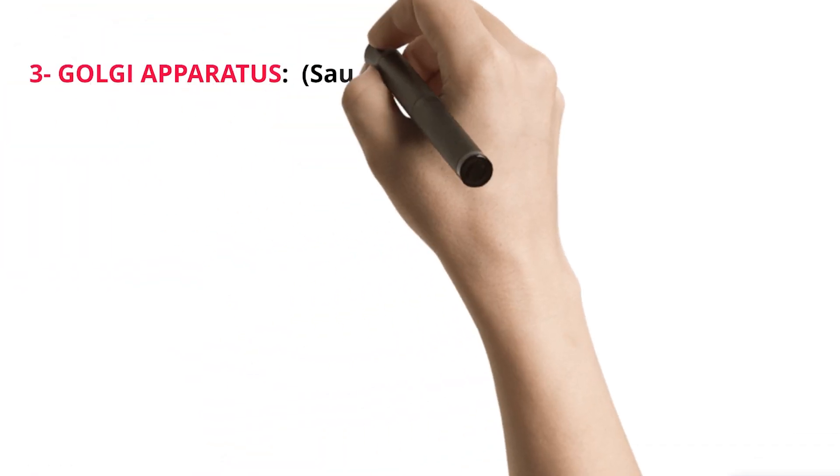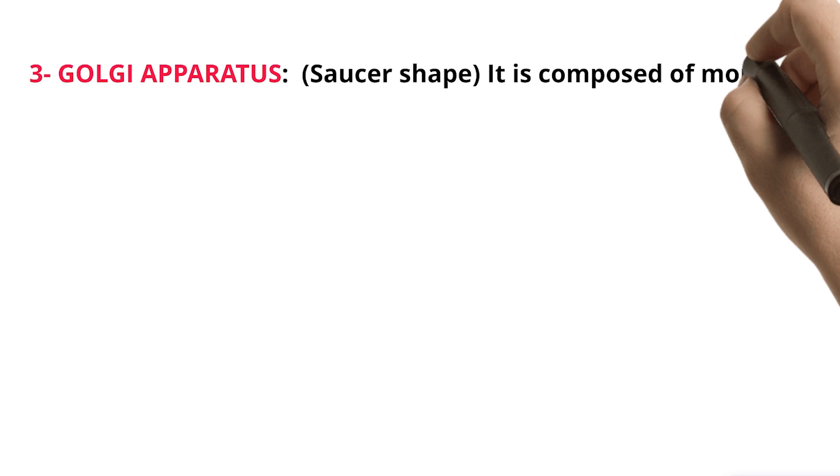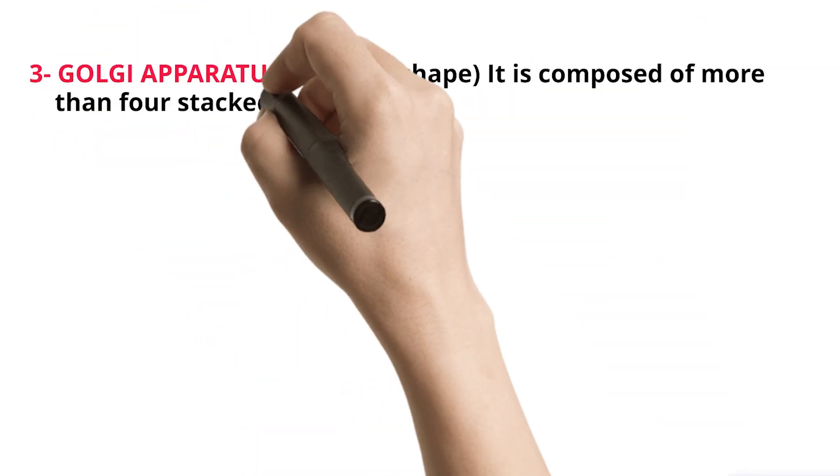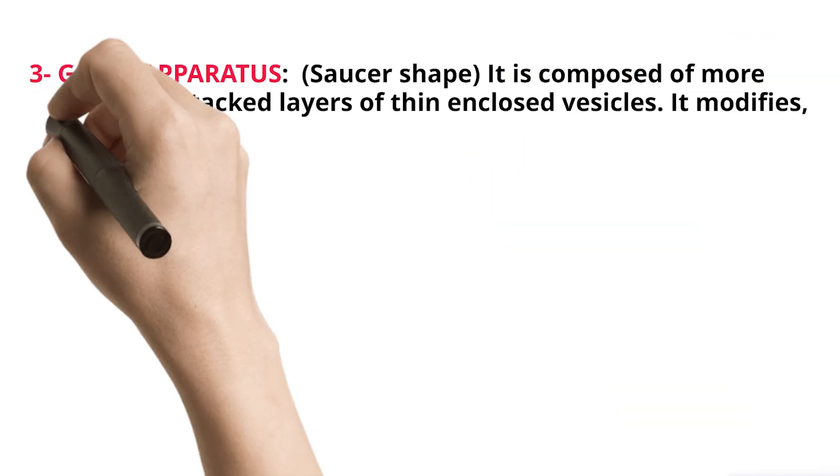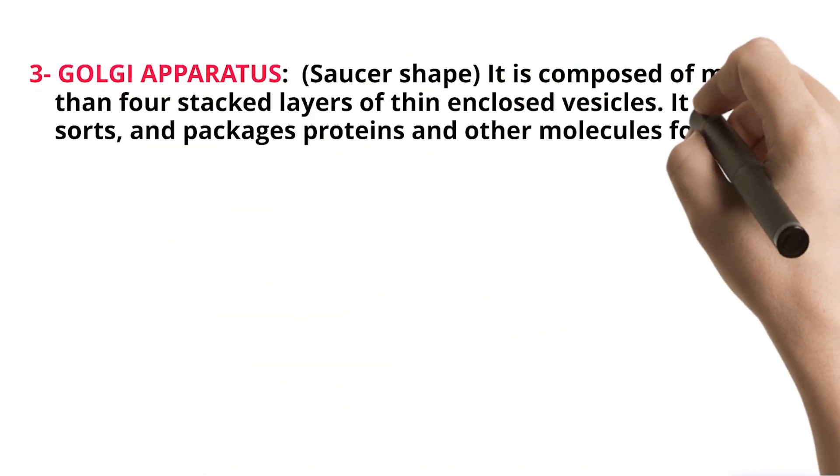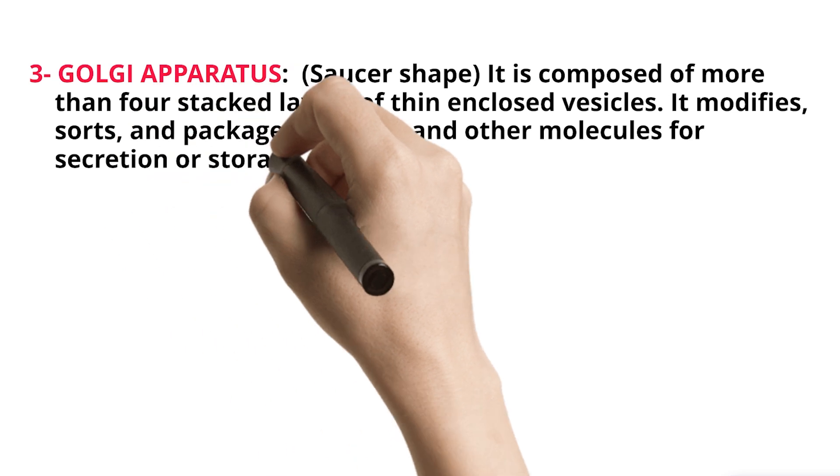3. Golgi apparatus. Saucer shape. It is composed of more than four stacked layers of thin enclosed vesicles. It modifies, sorts, and packages proteins and other molecules for secretion or storage.